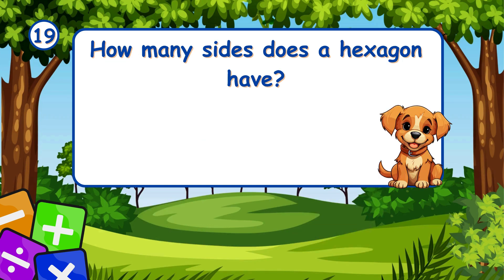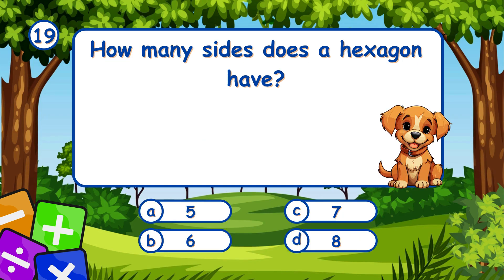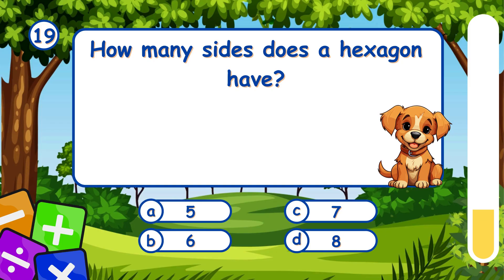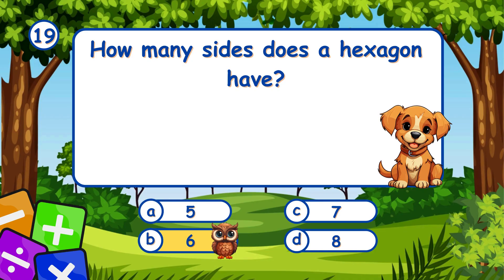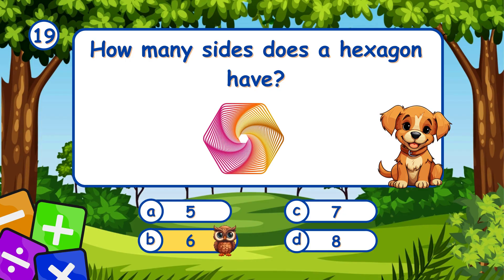How many sides does a hexagon have? It's B, 6. A hexagon has 6 sides.